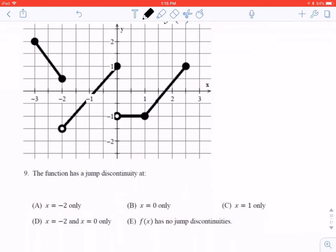Nine, where does the function have jump discontinuity? Has it here at negative 2? Has it here at 0? So 2, negative 2, and 0 is answer D.